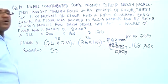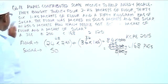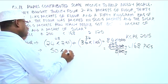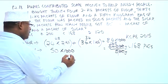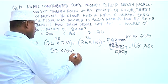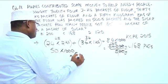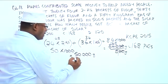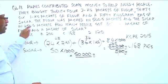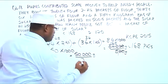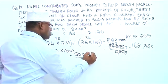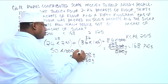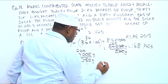Now, what about sugar? Each packet is 250 grams. First, let us multiply 50 kilograms by 1,000 to get the total sugar in grams — that gives us 50,000 grams. Now we divide by 250 grams. Cancelling zeros: 50,000 divided by 250 — remove two zeros from each, giving 500 divided by 25, which equals 2, and we have two zeros, so we get 200 packets of sugar.